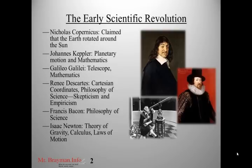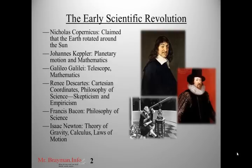René Descartes gives us the Cartesian coordinates used in graphing, as well as a lot of the philosophy of science, such as skepticism and empiricism — the idea that every scientific idea should be viewed skeptically until proven, and that proof should be available for anyone to verify through experiment. Francis Bacon also contributed to the philosophy of science, and Isaac Newton came up with the theory of universal gravitation, calculus, and laws of motion.